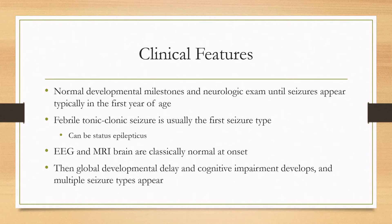A typical story might be someone who was born developmentally normal and had a normal exam up until the first year of age or whenever they first developed their seizures. The first seizure type you see is classically a febrile tonic-clonic seizure, and this can be a prolonged seizure or a status epilepticus.